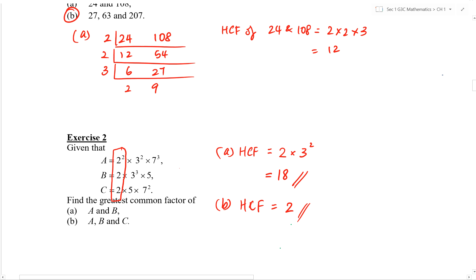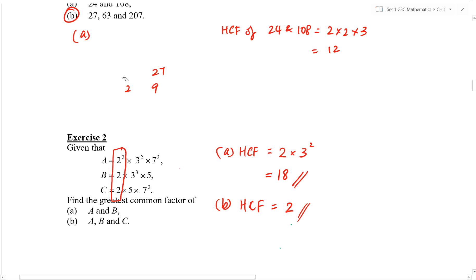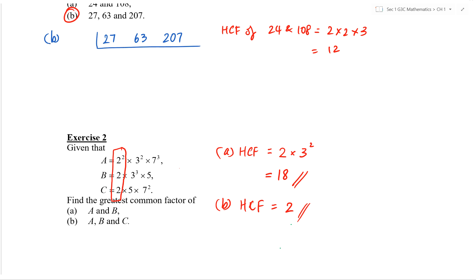Let us continue with Exercise 1, Part B. This time the difference is that you have three numbers. How do we deal with three numbers? It is still very similar. All we need to do is write out 27, 63, and 207. Same thing — we try to find the lowest common prime factors for these.